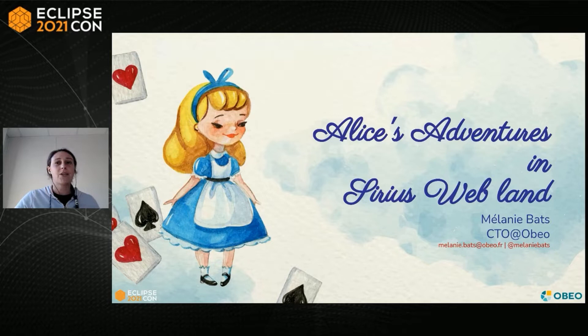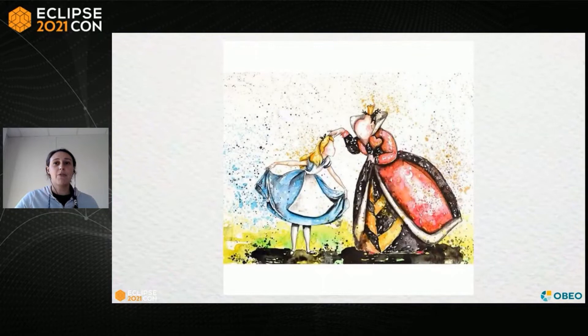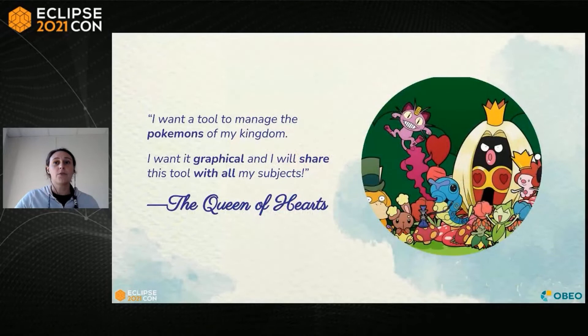She was a Java lover, free software activist, daily using an open society named Hiklis. One day, the Queen of Earth, who was her manager, comes to her and asks for a tool. The Queen wants to visualize and edit her Pokemon collection, and she wants to provide this tool to all the subjects of her kingdom, to help everyone manage their Pokemon decks easily.